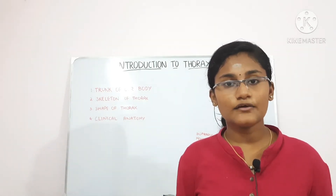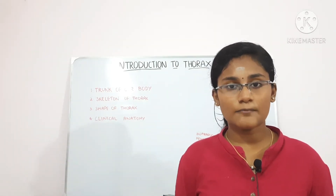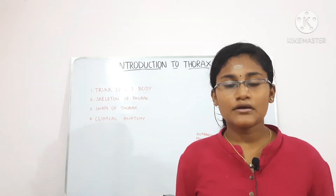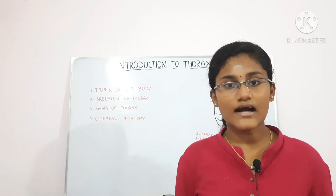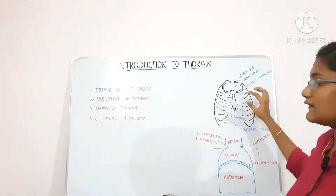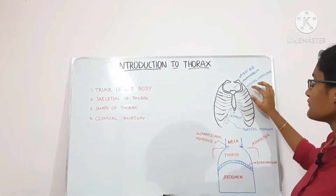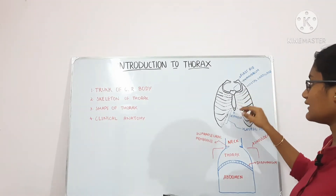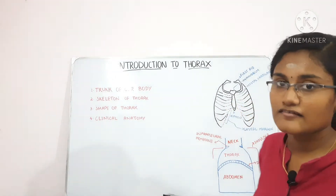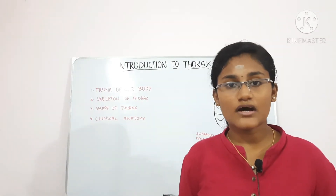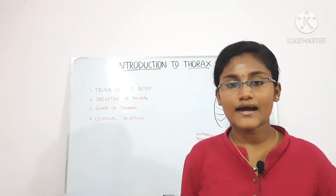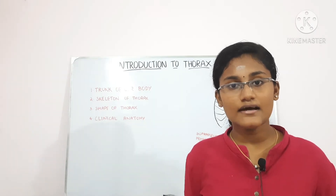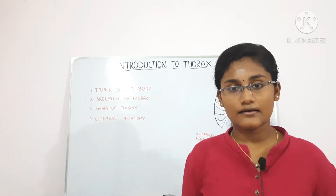All the ribs are connected posteriorly to the vertebral column. The first seven ribs are connected anteriorly to the sternum through their costal cartilages. They are called vertebrosternal ribs or true ribs because they attach themselves to the vertebral column posteriorly and the sternum anteriorly.